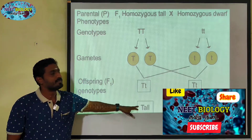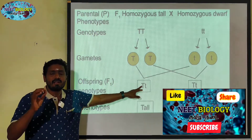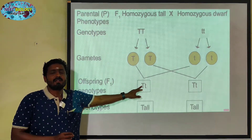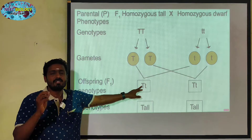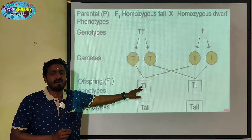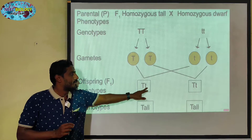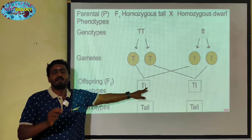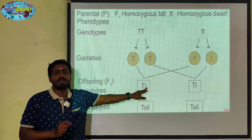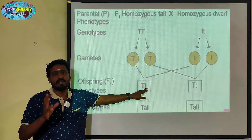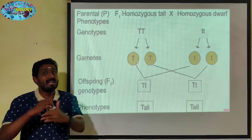Capital T represents tallness, while small t represents dwarf. The alleles do not blend with each other.